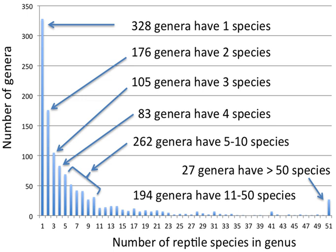Each genus should have a designated type, although in practice there is a backlog of older names without one. In zoology, this is the type species, and the generic name is permanently associated with the type specimen of its type species. Should the specimen turn out to be assignable to another genus, the generic name linked to it becomes a junior synonym and the remaining taxa in the former genus need to be reassessed.